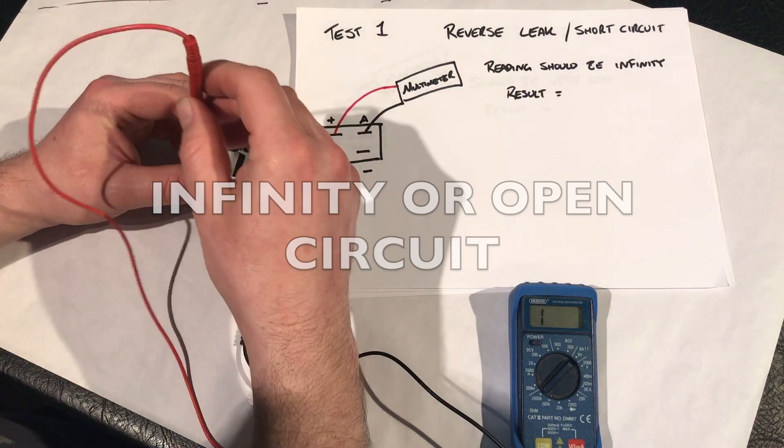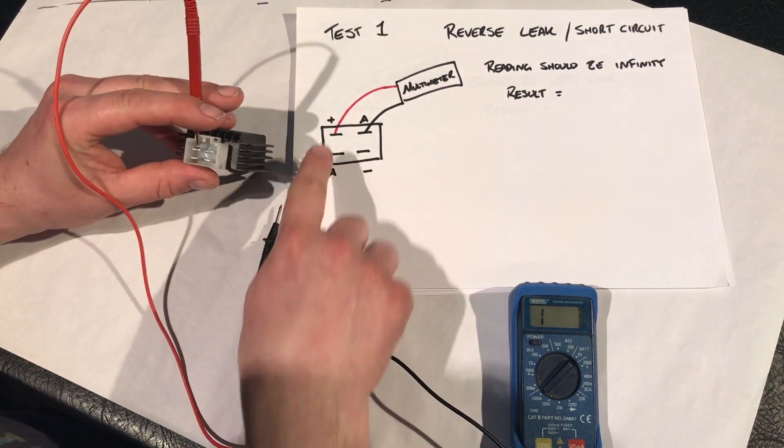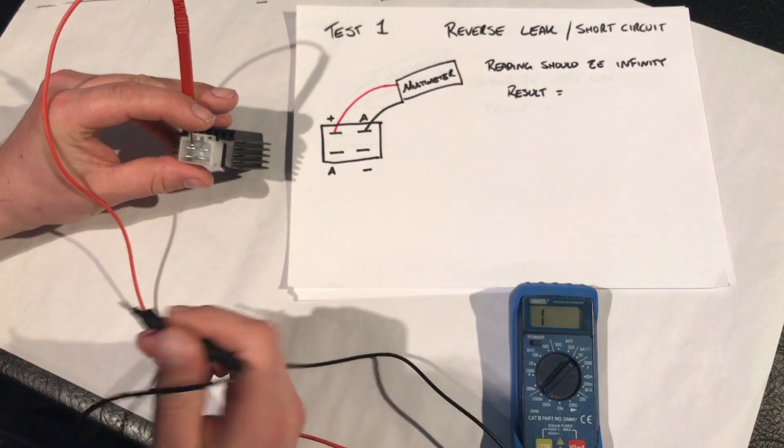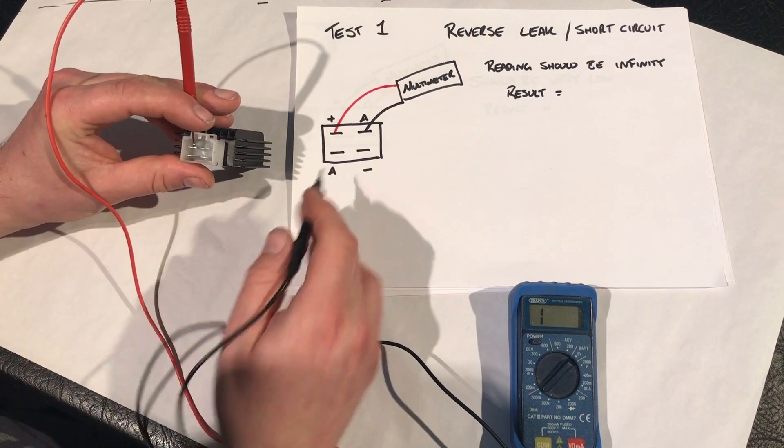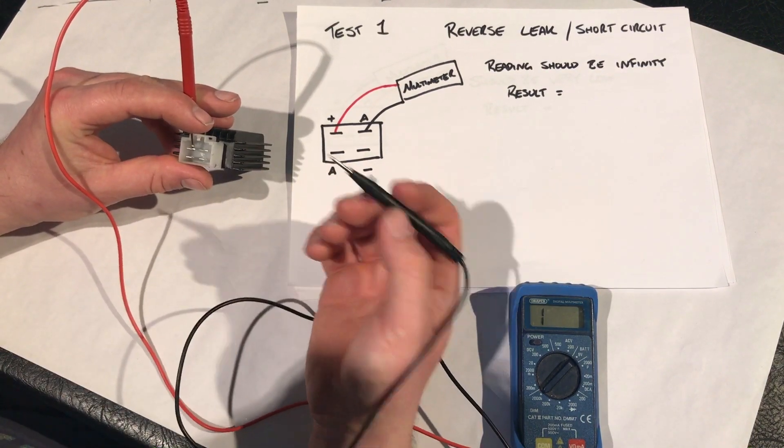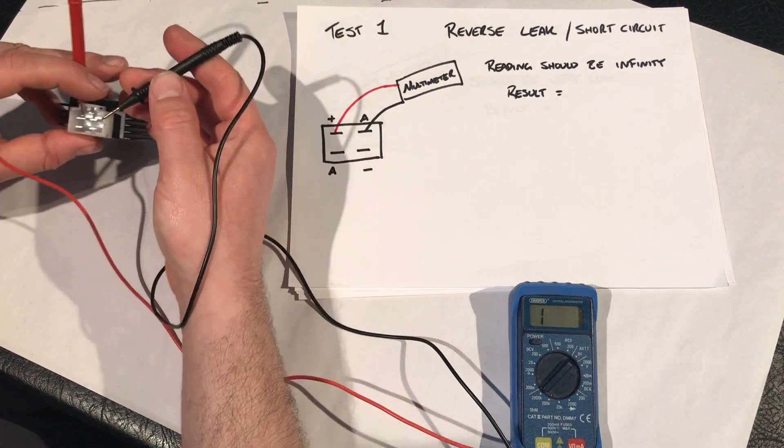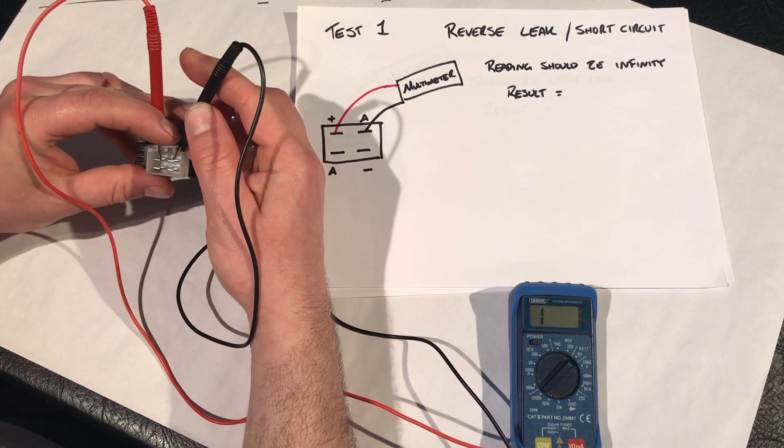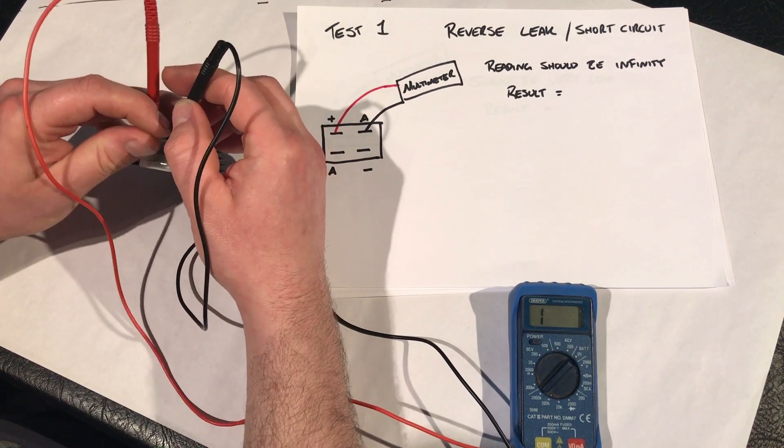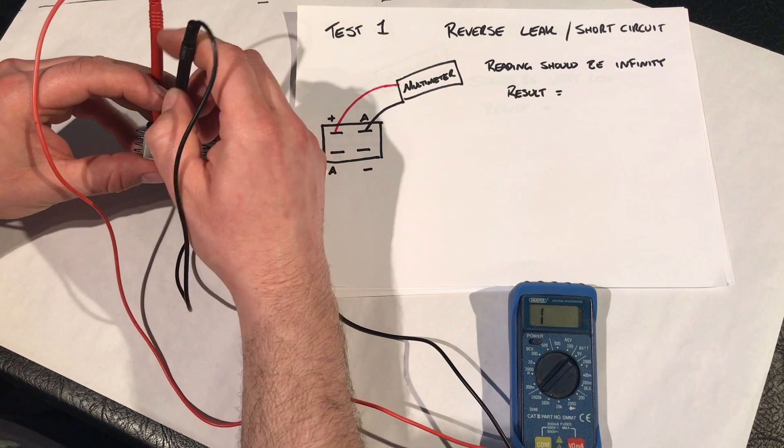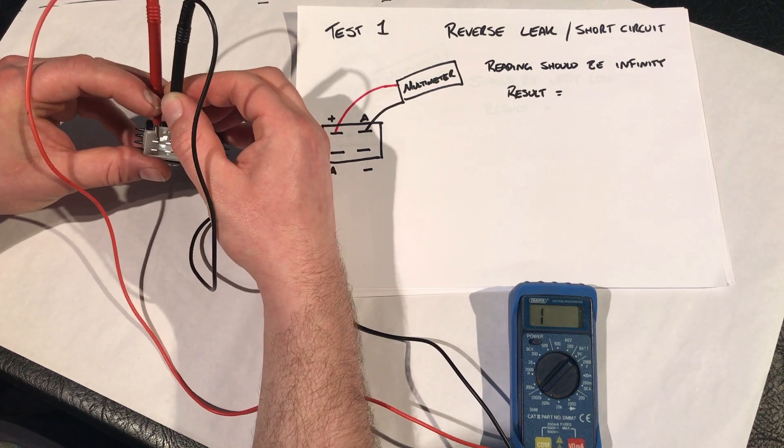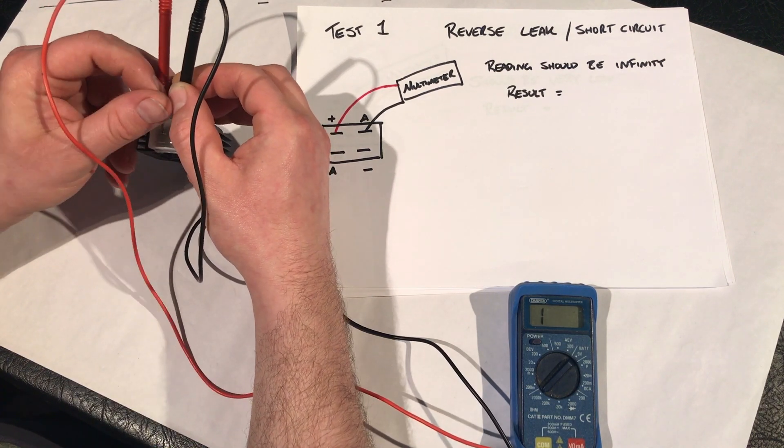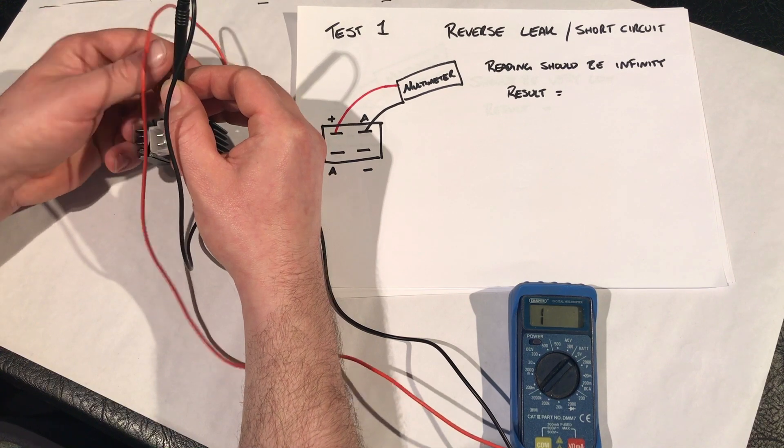So okay, let's start with the first one. So your positive on the battery positive multimeter, and then your neutral or negative multimeter onto the alternator connection. And as you can see, they're both well connected, and you've got an infinite reading. So in that case, that's a pass.